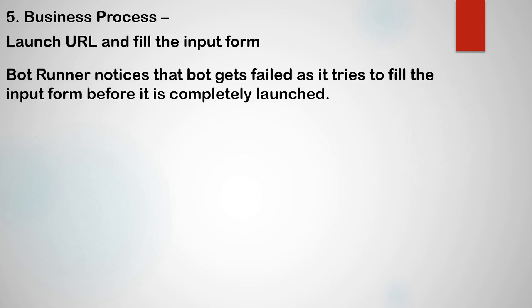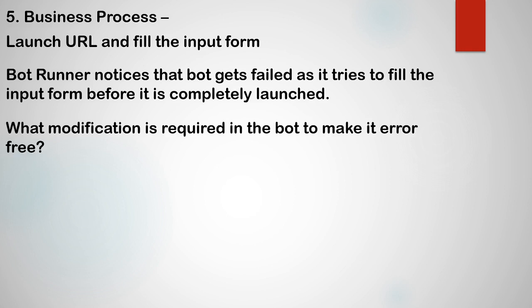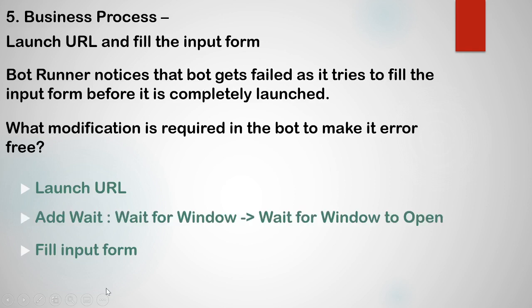The next question provides a business process to launch a URL and fill an input form. The bot runner notices that the bot fails as it tries to fill the input form before it is completely launched. What modification is required to make it error-free? To fix this, in between the launch URL action and the fill form actions, we are going to use the 'wait for window to open' action. This action waits for the input form window to open, and only once the window is open does it fill the form — hence no error.